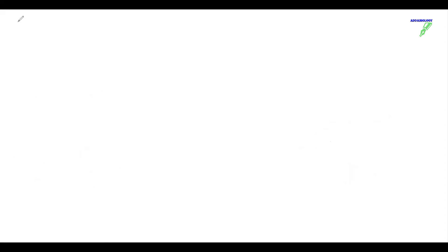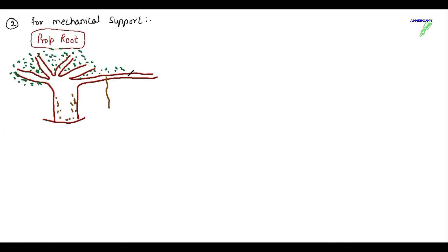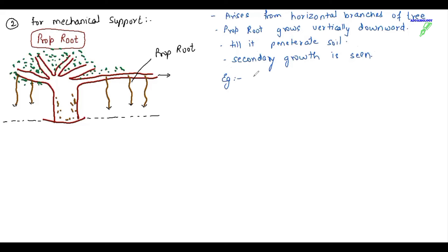Next modification that we have is for mechanical support. Most of the time it happens that the root of the plant is weak, so in order to get main support, these roots develop some kind of modifications. Here we are drawing the diagram of a banyan tree where we can see the prop roots. As the branches of this root tree grow horizontally over long distance, the prop root develops, and these prop roots, they are going to provide support so that the branches do not break or they do not fall on each other. So we can say for prop root, it arises from horizontal branches of tree. Prop root grows vertically downward towards the soil till it reaches or it penetrates the soil. If the secondary growth is seen, secondary growth means they show the presence of cambium. Example is banyan tree. Binomial name is Ficus benghalensis.